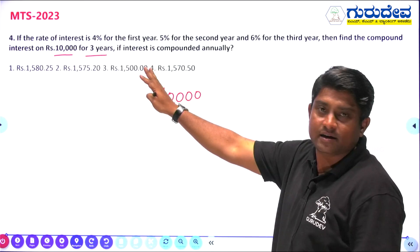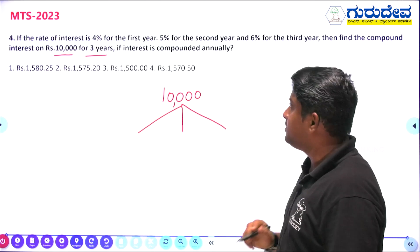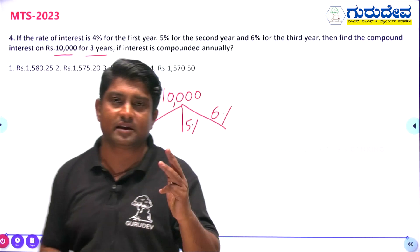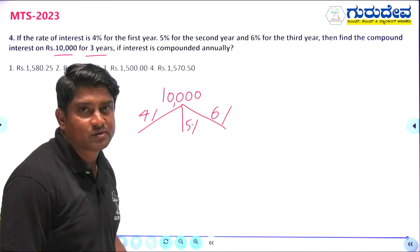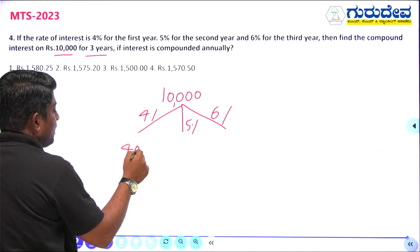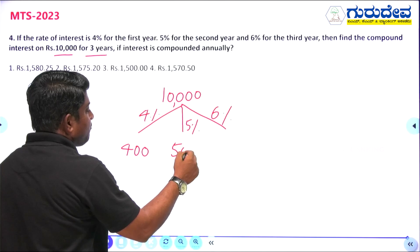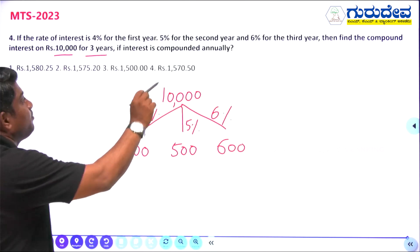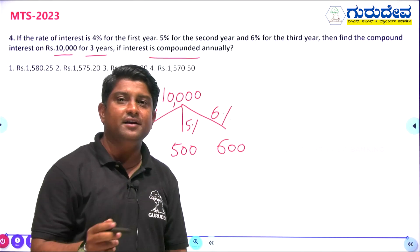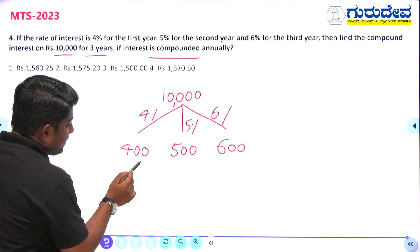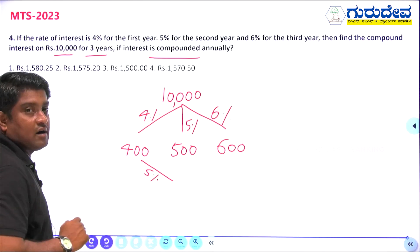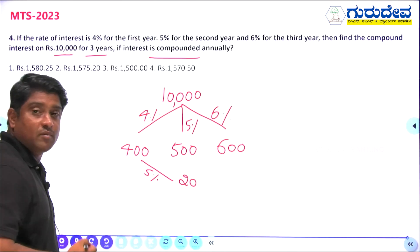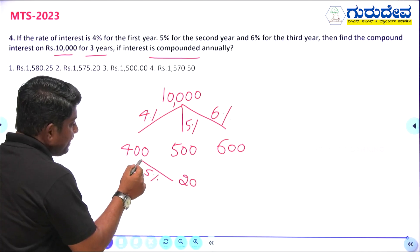Draw three lines for three years. First year: 4% of 10,000 = 400 rupees. Second year: 5% of 10,000 = 500 rupees. Third year: 6% of 10,000 = 600 rupees. Since it is compound interest, we also get interest on interest. For the second year, 5% of 400 rupees — 1% of 400 is 4, so 5% is 20 rupees.